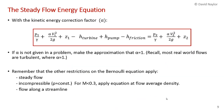Here's the steady flow energy equation rewritten with the alpha correction terms to account for the assumption of uniform flow. Often in problem sets, alpha is not given, so we make the approximation that alpha equals 1. This is reasonable because most real-world flows are turbulent, and for turbulent flows the maximum and average velocities are not very different. But the correction factor is important and can matter significantly for laminar flows.